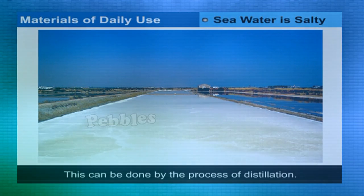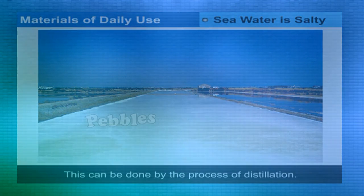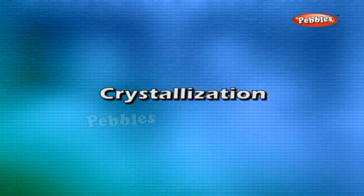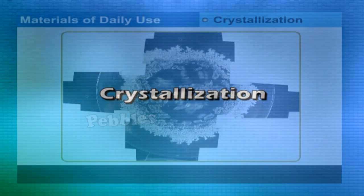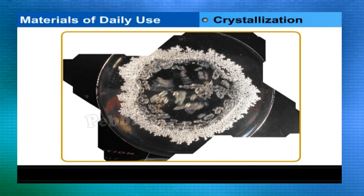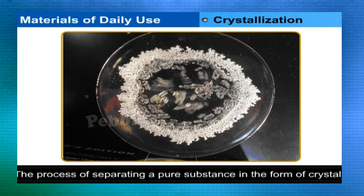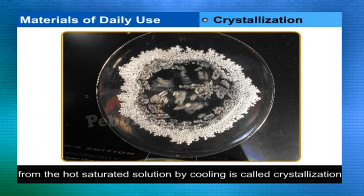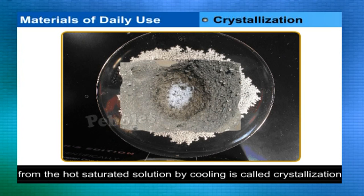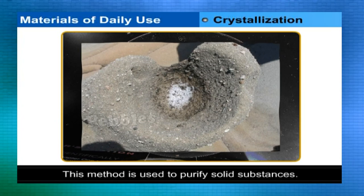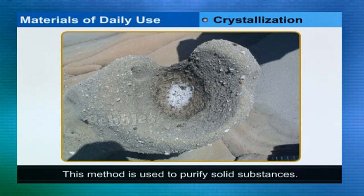The process of removing salts from saline water is known as desalination. It is necessary to desalinate water to make it potable. This can be done by the process of distillation. Crystallization is the process of separating a pure substance in the form of crystals from a hot saturated solution by cooling; it is used to purify solid substances.